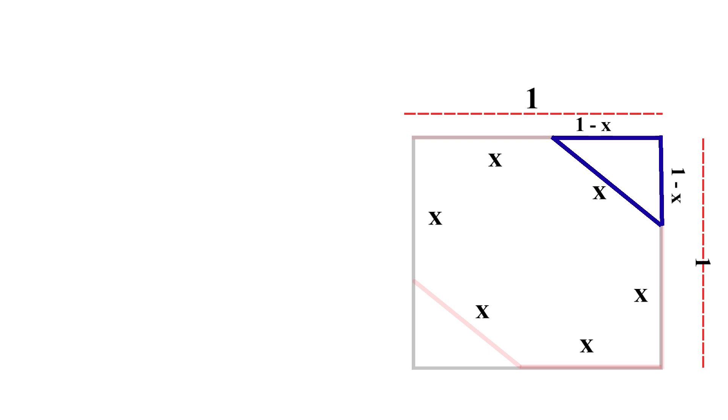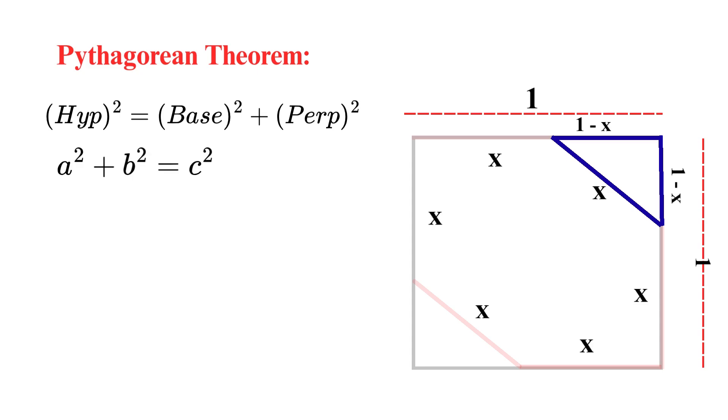So, the right triangle has sides of length x, 1 minus x, and 1 minus x. Now, we can use the Pythagorean theorem. The square of the length of the hypotenuse, the side opposite the right angle, is equal to the sum of the squares of the lengths of the other two sides, legs. a² + b² = c², where a and b are the two legs of the right triangle, and c is the hypotenuse.